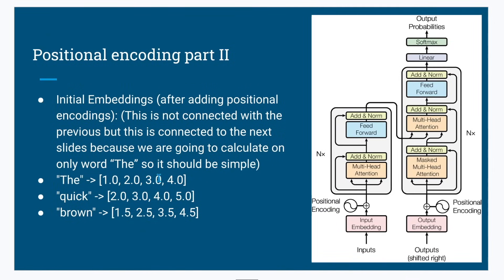Let's look into the calculation with just three words: 'the', 'quick', 'brown' — a limited number of words so that we can see how the calculation goes on between this small set of vectors.